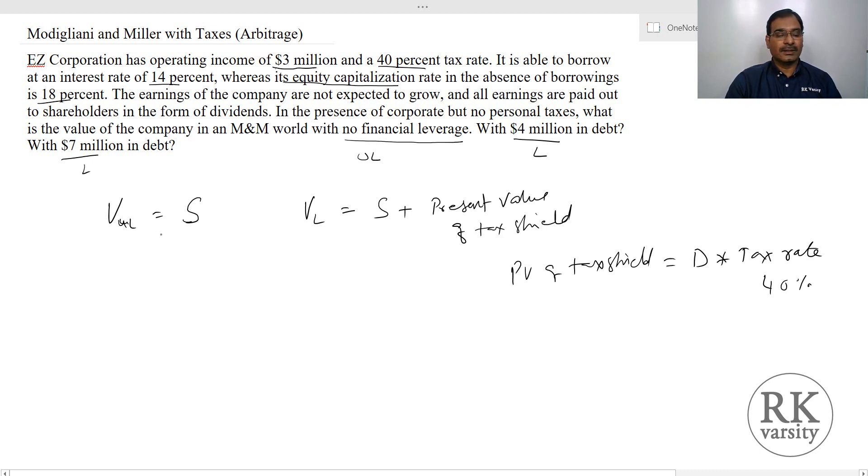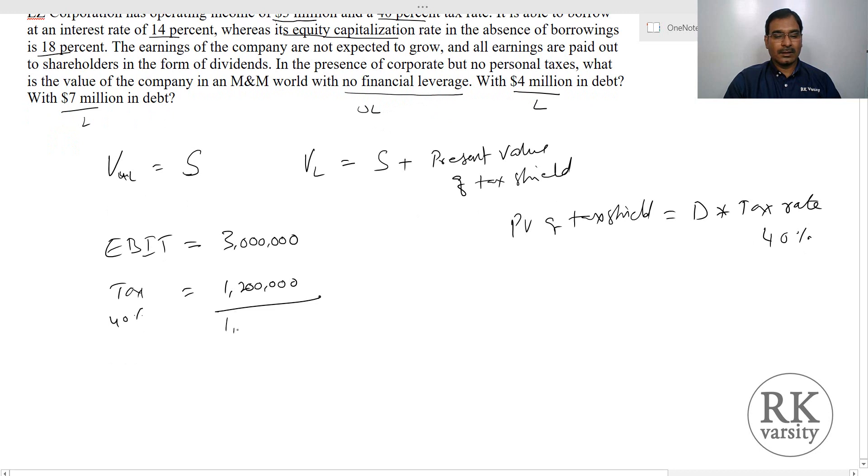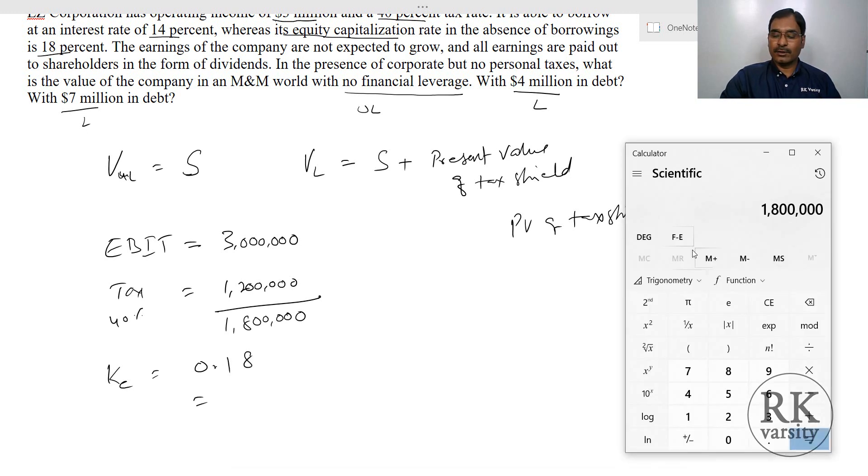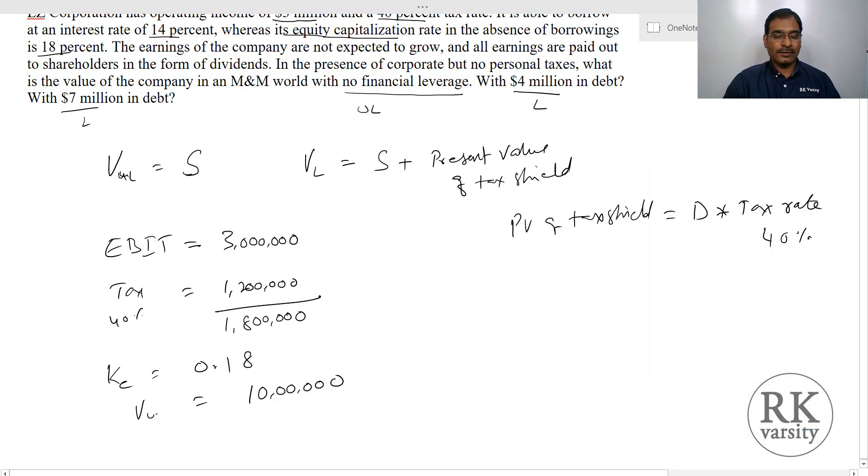First we calculate the value of an unlevered firm. EBIT equals $3 million and tax on this is 40%, so $1,200,000, leaving $1,800,000. Then equity capitalization rate equals 18% or 0.18. Value of unlevered firm is $1,800,000 divided by 0.18, which equals $10 million.